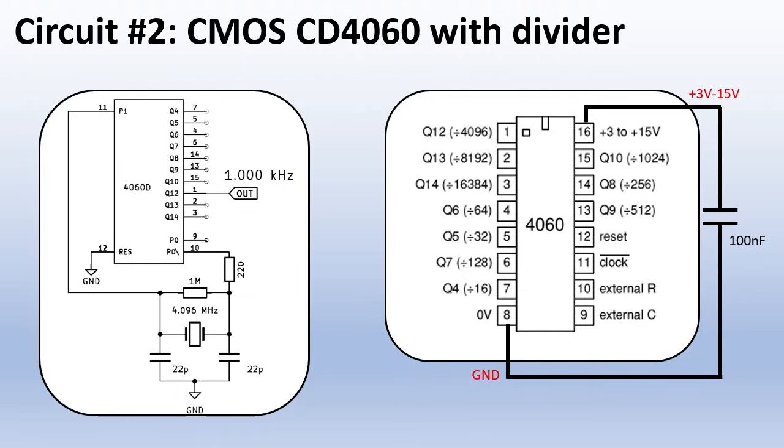This IC has a binary divider and can operate at higher voltages, 3 to 15V. Here at the bottom you see it is the same as the first circuit. Inside the IC is also an inverter driving the oscillator. What is cool about this IC is the binary divider outputs as you see here on the right.